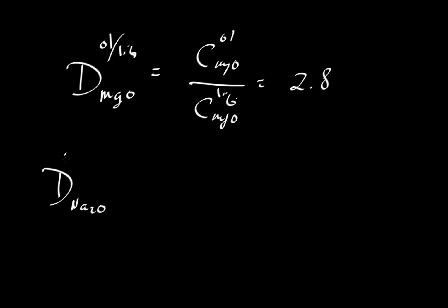Let's say we have the oxide Na2O. So if we do some experiments, the concentration of sodium oxide in olivine divided by the concentration of Na2O in a liquid, a magmatic liquid, is going to be something that's much smaller than the case for MgO, 0.012.